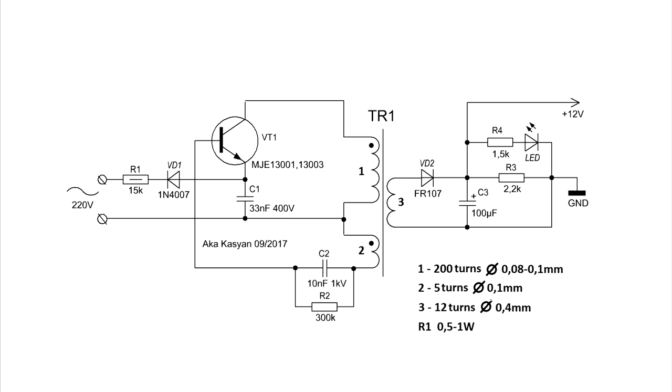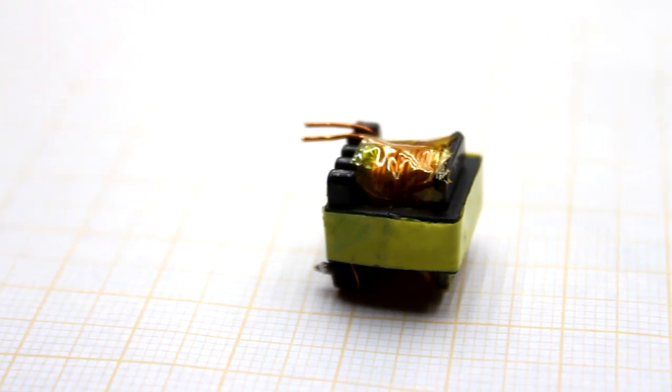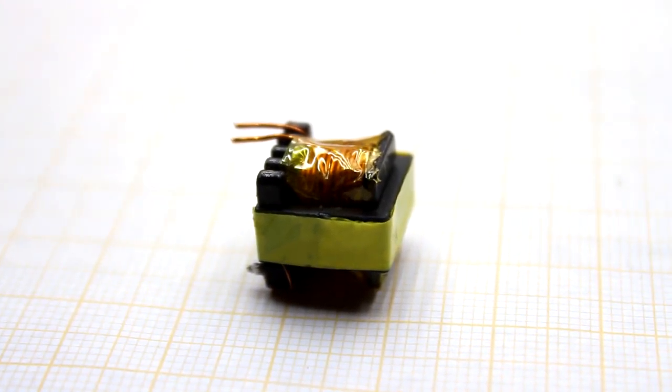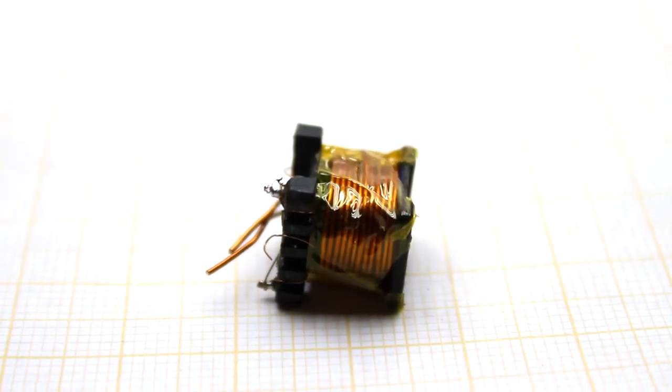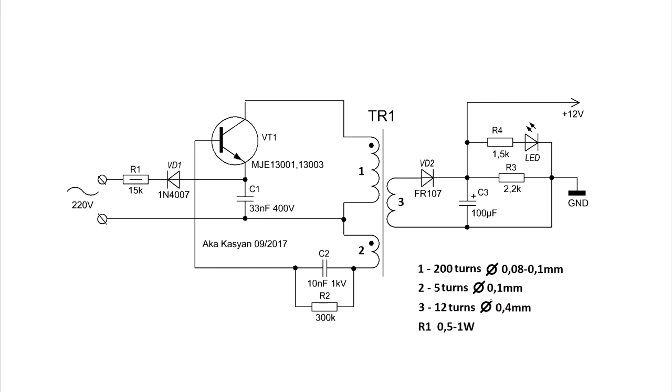Further, nothing special: the filtering capacitor, the LED indicator, and the pair of resistors. An important point is the winding of the transformer. On the printed circuit board and on the diagram, the beginnings of the windings are indicated, so no problems will arise. Initially, the primary winding is wound, which consists of 200 turns.